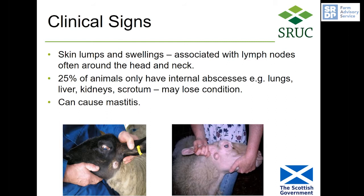So what will you see? You might see sheep that develop lumps and bumps around their head and neck, because there are a number of lymph nodes that you can feel and see in that area. However, in some cases you won't see anything at all — it's estimated that about a quarter of infected animals may only have internal abscesses, for example in their lungs and other tissues. It can also in some cases cause mastitis. Animals with internal abscesses may lose weight and become thinner than other animals in the flock.